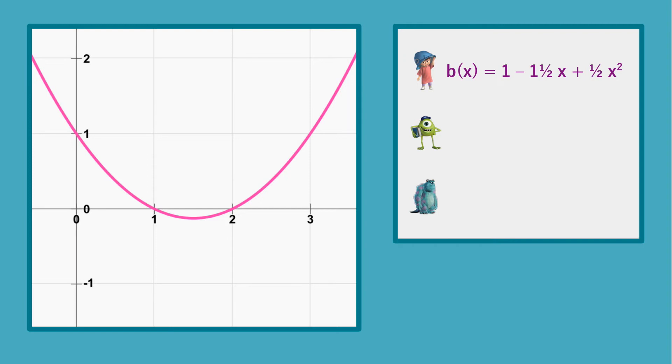As with the secret sharing scheme, Boo gives the shares of her polynomial to Mike and Sully. She also keeps 1 share for herself. I highlighted the values of x for which each of the parties receives their share, because they will be collecting several. It is important that they get their shares consistently for the same value of x, as will become clear in a moment.